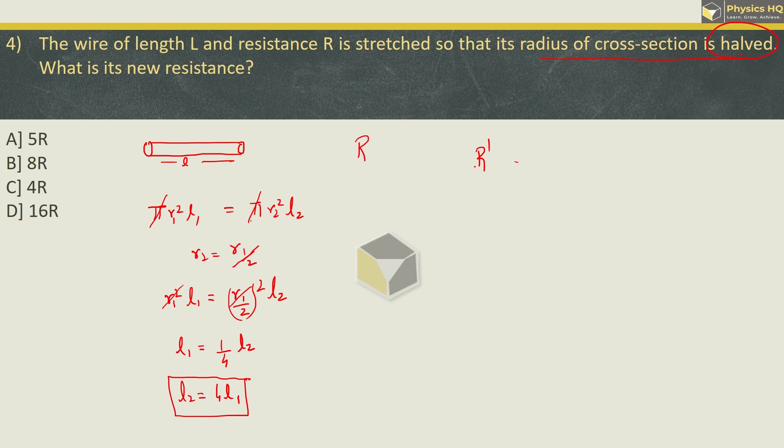Now let us find out the new resistance. For this we need to remember the formula for resistance. Resistance is given by rho into L by A, where A will be pi R square. So new resistance by old resistance formula: rho into L2 upon pi R2 square, divided by rho L1 upon pi R1 square. Resistivity cancels. We are left with L2 upon L1 into R1 square upon R2 square.